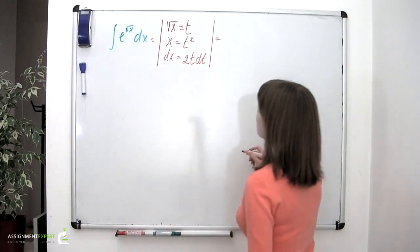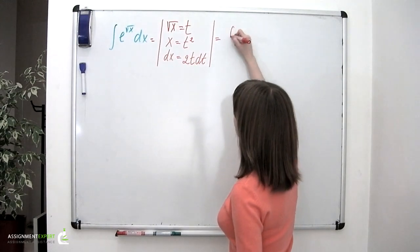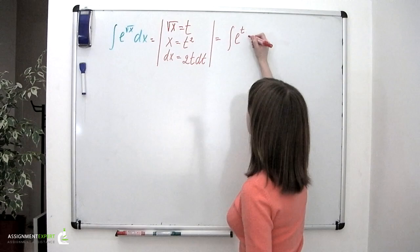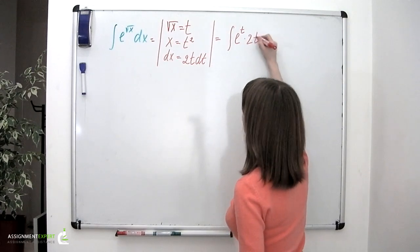Substituting these into the initial integral, we'll have the integral of e to the power of t times 2t dt.